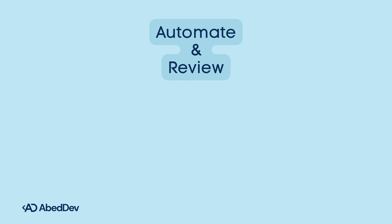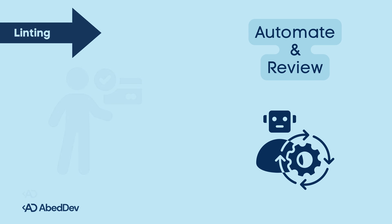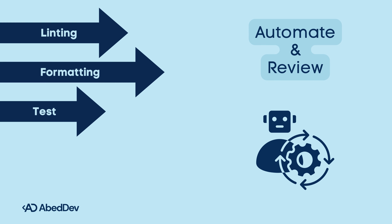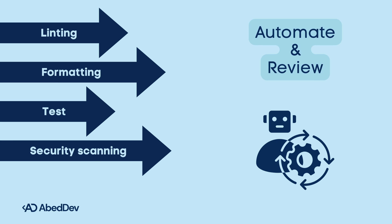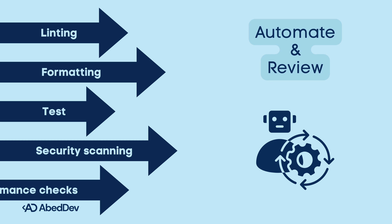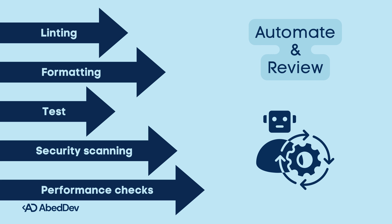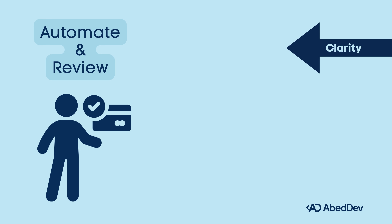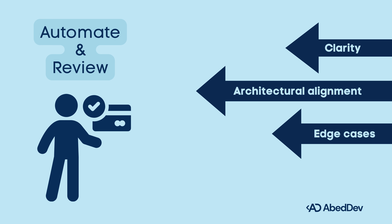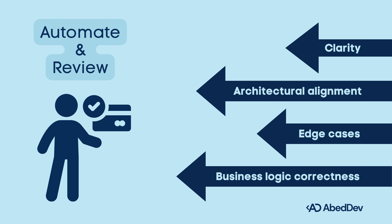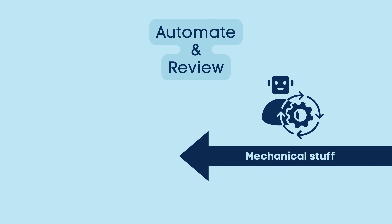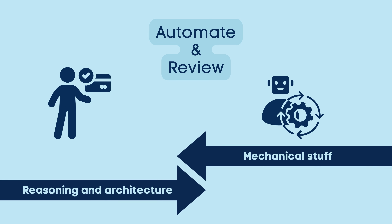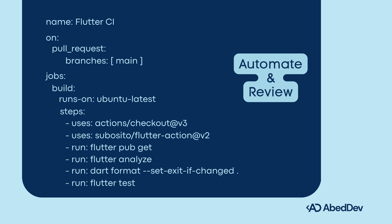Use automation for repetitive checks and humans for judgment. Automation handles linting, formatting, unit and widget test execution, security scanning, catching bad dependencies, and performance checks — warn if the build gets too big or slow. Human review ensures clarity, architecture alignment, edge cases, and business logic correctness. The sweet spot: automation handles mechanical stuff, humans focus on reasoning and architecture. PRs cannot be merged until all automated checks pass and at least one senior dev approves.